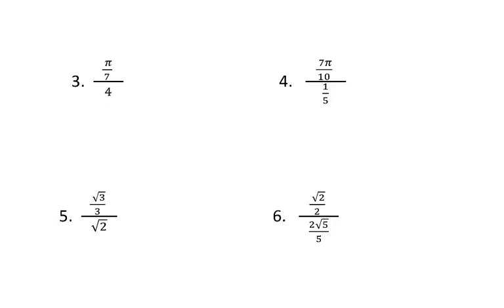Look at question three. Figure out the longest division line and the denominator — that's seven. Drop it down and do the multiplication: four times seven equals 28. Pi stays at the top, so pi over 28 is the answer.